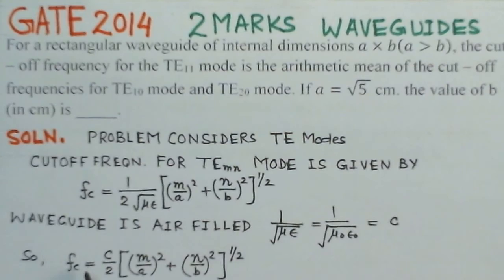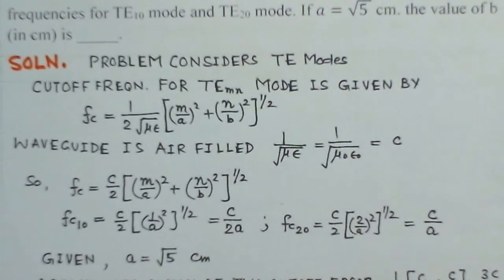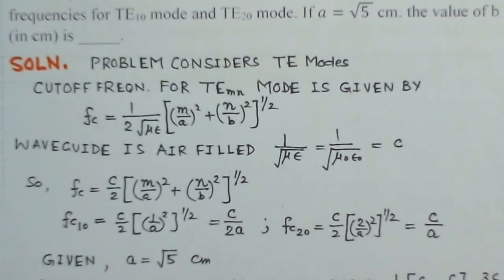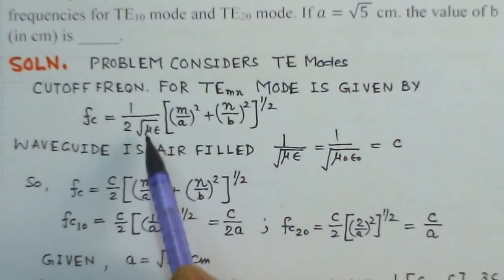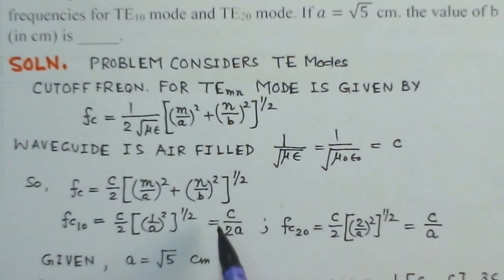So, this relation has been simplified further. That means, this Fc would be C by 2 times M over A whole squared plus N over B whole squared to the power half. Now, we will try to find out the two modes.